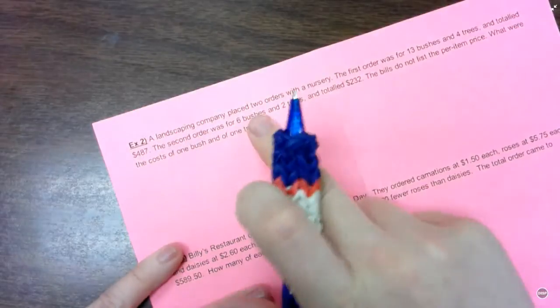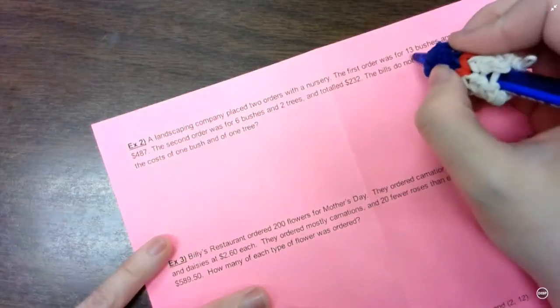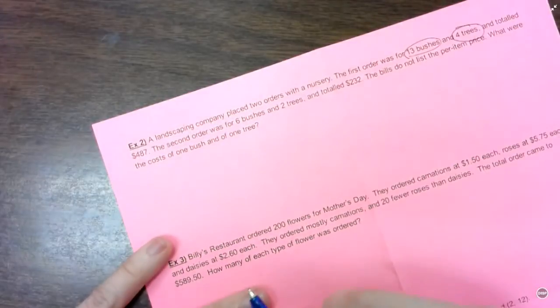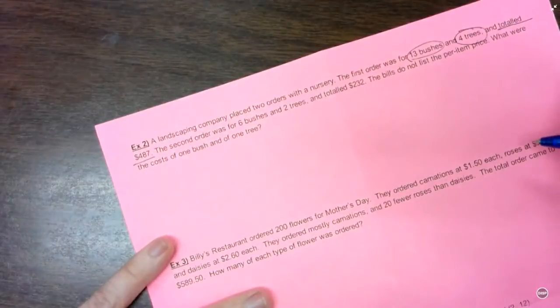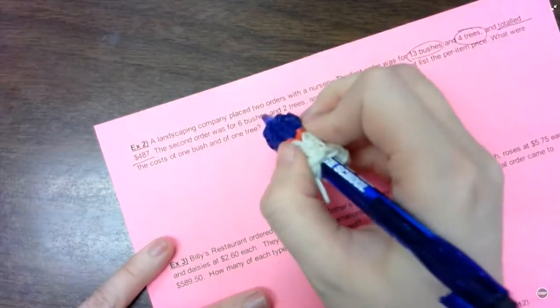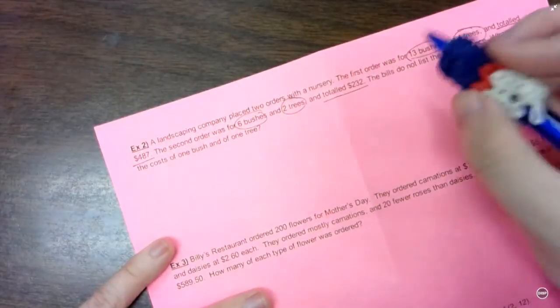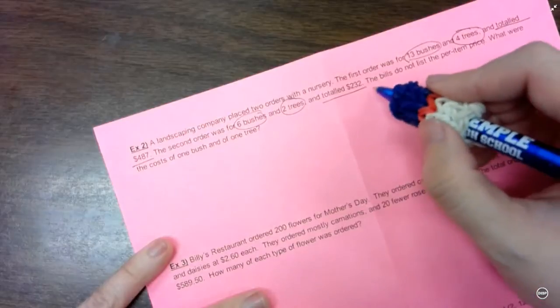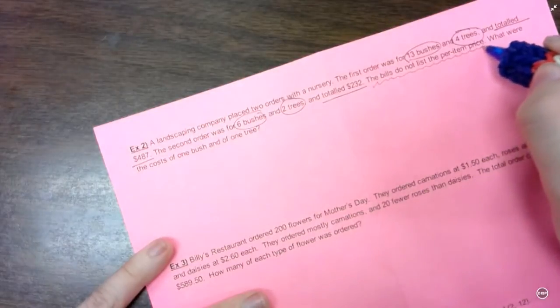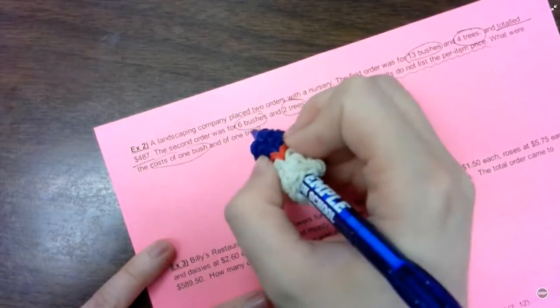So a landscaping company placed two orders with a nursery. The first order was for 13 bushes and 4 trees and totaled $487. The second order was for 6 bushes and 2 trees and totaled $232. The bills do not list the per item price. I'm not sure who would ever do that. Apparently this nursery does. What were the costs of one bush and of one tree?